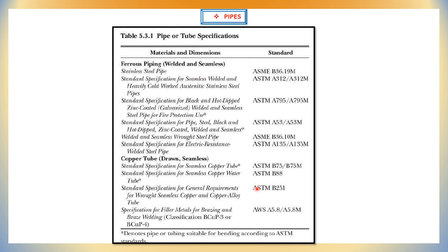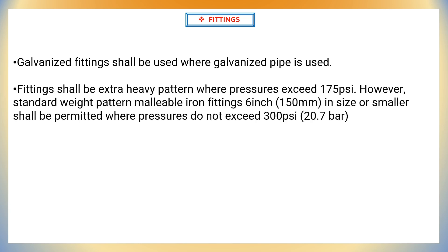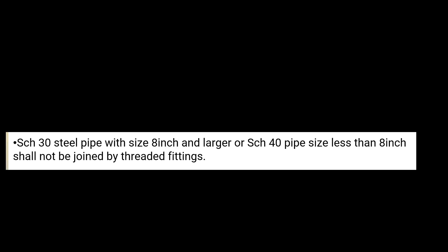The second major component is fittings. Galvanized fittings shall be used where galvanized pipe is used. Fittings shall be extra heavy pattern where pressures exceed 175 psi. However, standard weight pattern malleable iron fittings for 6-inch size or smaller shall be permitted where pressures do not exceed 300 psi. Schedule 30 pipes of 8 inches and larger, or Schedule 40 pipe less than 8 inches, shall not be joined by threaded fittings.